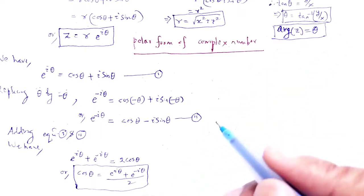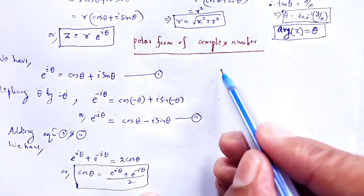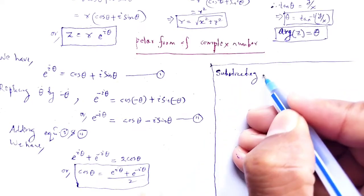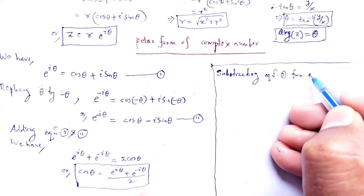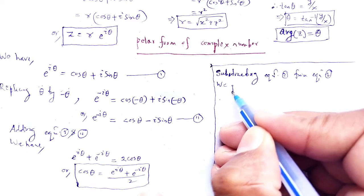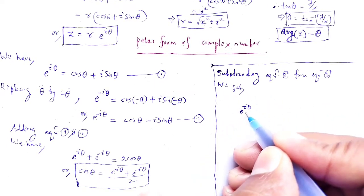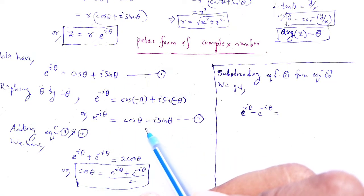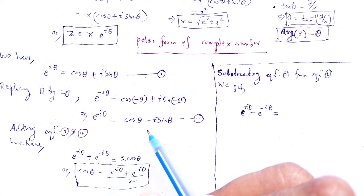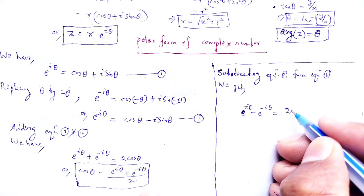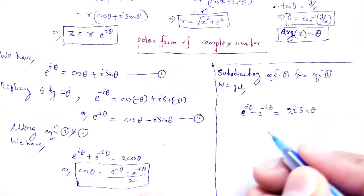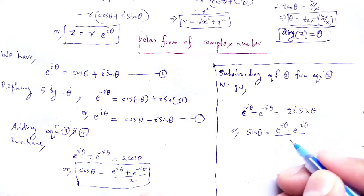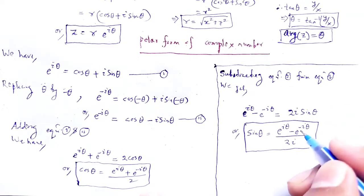Subtracting equation 2 from equation 1: the cos theta terms cancel out. We have 2i sin theta, so sin theta equals e to the power i theta minus e to the power minus i theta, all divided by 2i.